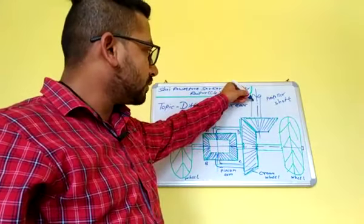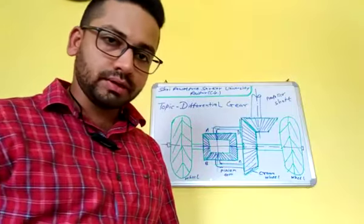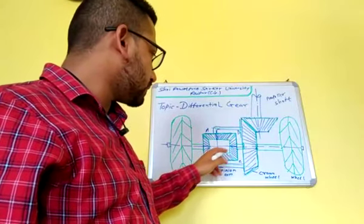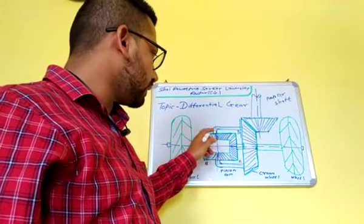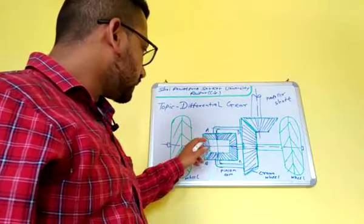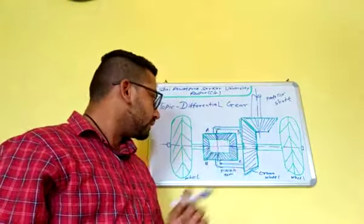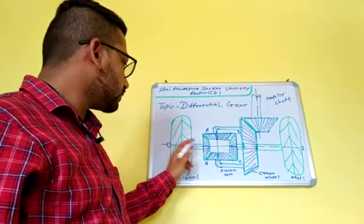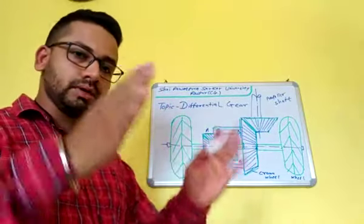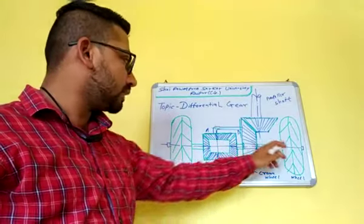The power comes from the crown wheel. After the crown wheel, there are 4 gears — these are 4 pinion gears. The pinion gears are directly connected to the rear axle.